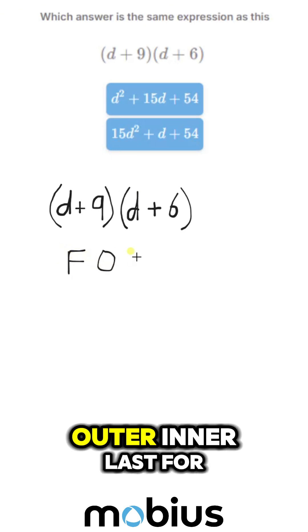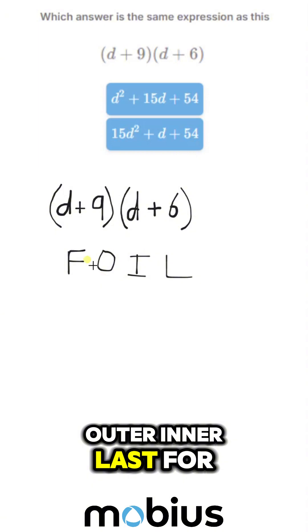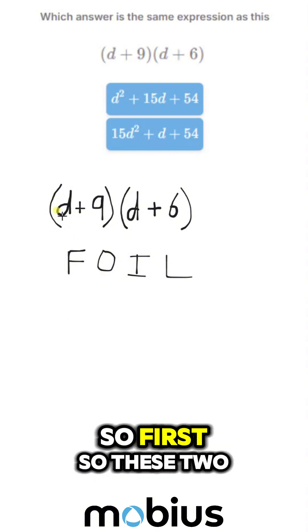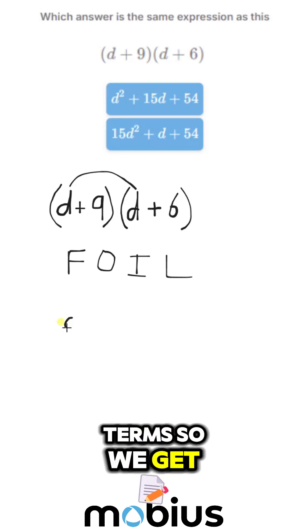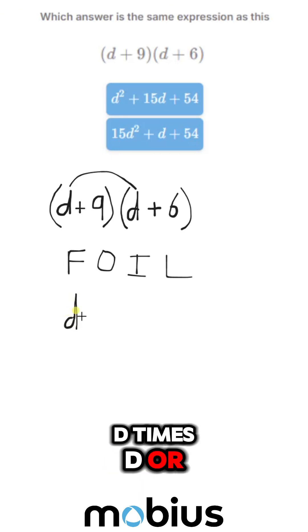First, outer, inner, last for our terms. So firsts, these two terms here, these are our first terms. So we get d times d, or d squared.